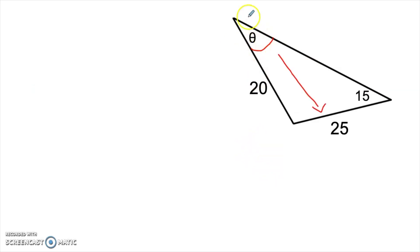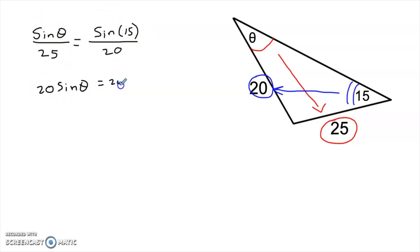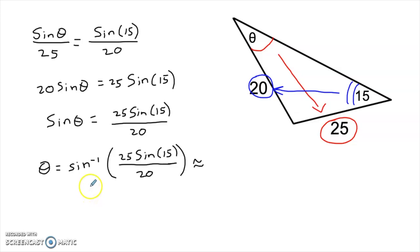Law of sines works for finding missing angles too — it's not just for missing sides. In this triangle we don't know what theta is, but we know the side across from it is 25, and the angle 15 is across from the side of length 20. So we set up: sine of theta over 25 equals sine of 15 over 20. Since I put the sine of the angle in the numerator on the left, I also have the sine of the angle in the numerator on the right. Cross multiplying gives 20 times the sine of theta equals 25 times the sine of 15, so sine of theta equals 25 times the sine of 15 over 20. To get to theta I need to use the inverse sine, so theta equals the inverse sine of that whole expression. Plugging into the calculator gives approximately 18.88 degrees.